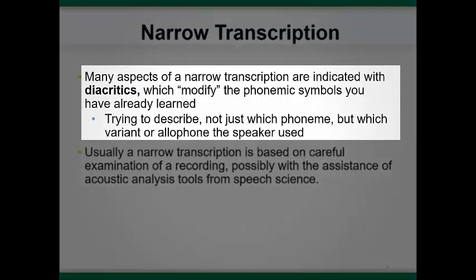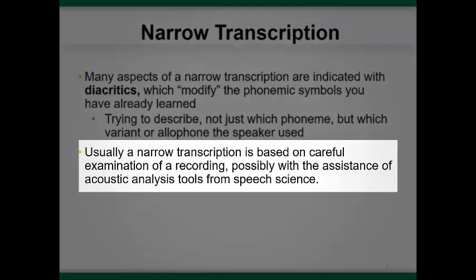In addition to transcribing the allophones, diacritics allow you to indicate how a phoneme is modified, so you are trying to transcribe the specific allophone, variant, or distortion produced by the speaker. It is often difficult to determine which allophone was used without listening multiple times, so narrow transcription is typically not done live in a clinical setting. Instead, we would typically transcribe from a recording, possibly with assistance from acoustic analysis tools that you will learn about in speech science.